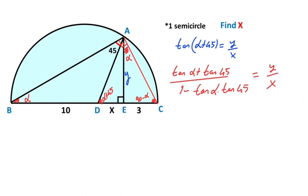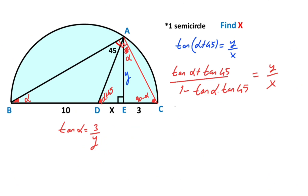If you focus on this triangle to calculate tangent alpha — tangent alpha equals 3 over y. Therefore if you plug in this value into the equation: (3/y + 1) over (1 minus 3/y) equals y over x, since tan 45° equals 1.